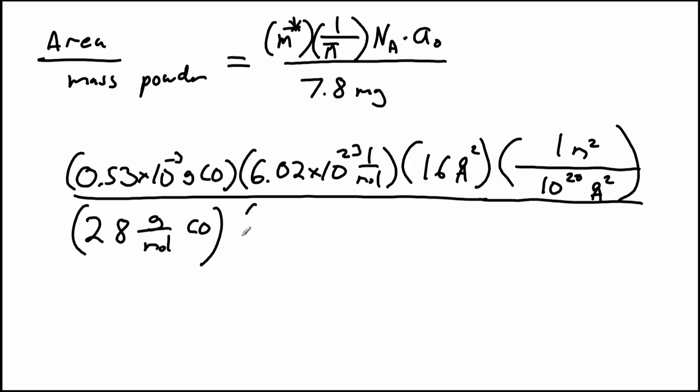And we need to also divide by our mass of powder. So we have 7.8 times 10 to the negative third grams of powder, the powder being the adsorbent. So we plug all that in and we get 234 meters squared per gram.